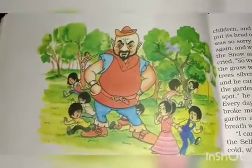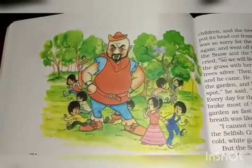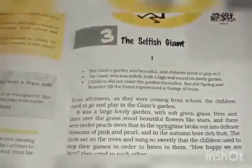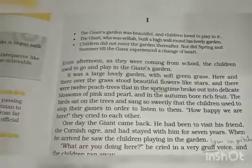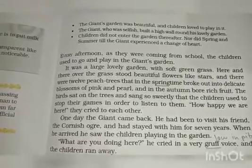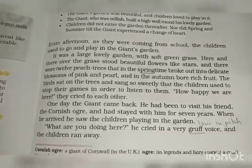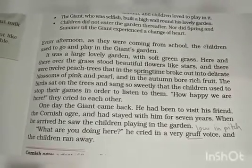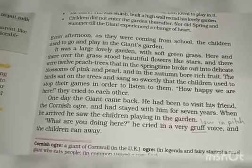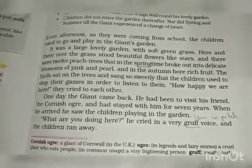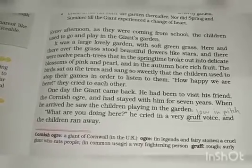A giant is a huge figure in comparison to normal human beings. Now let's begin with the story. Every afternoon as children were coming from school, they used to play in the giant's garden. It was a large lovely garden with soft green grass, and beautiful flowers that looked like stars. There were twelve peach trees that in the springtime broke out into delicate blossoms of pink and pearl.